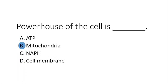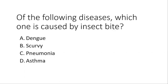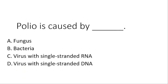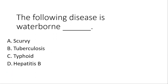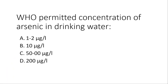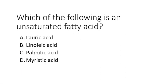The powerhouse of the cell is — the correct answer is mitochondria. One of the following diseases is caused by an insect bite: that is dengue. The infected insect is the Asian tiger mosquito, as discussed earlier. Polio is caused by a virus with single-stranded RNA. The following disease is waterborne — the correct answer is typhoid. WHO's permitted concentration of arsenic in drinking water is 10 micrograms per liter. Which of the following is an unsaturated fatty acid? The correct answer is linoleic acid.